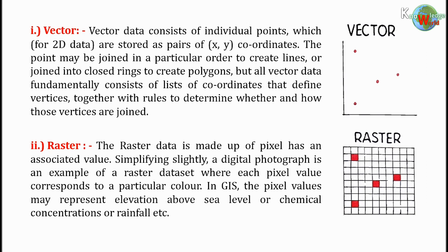A digital photograph is an example of a raster data set where each pixel value corresponds to a particular color. In GIS, the pixel values may represent elevation above sea level, chemical concentrations, rainfall, etc.